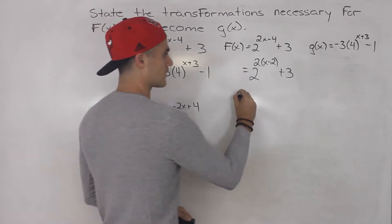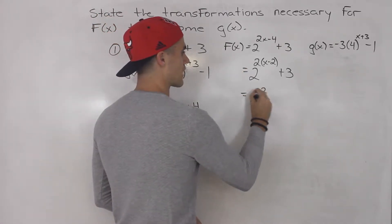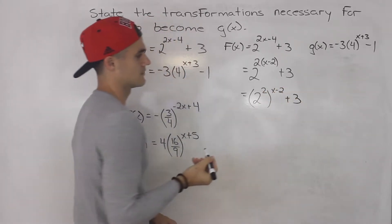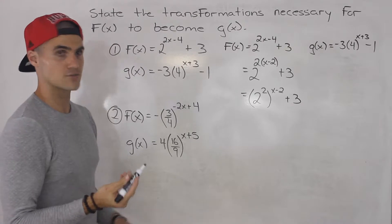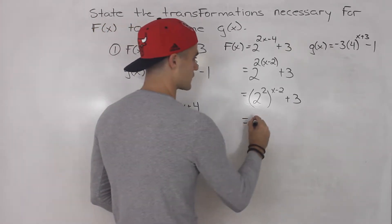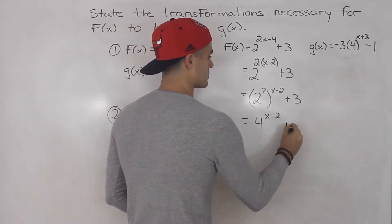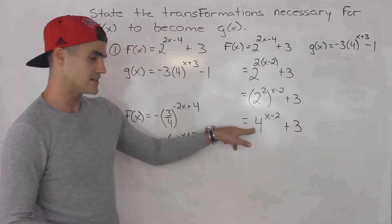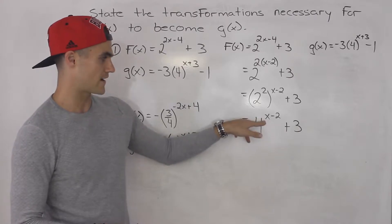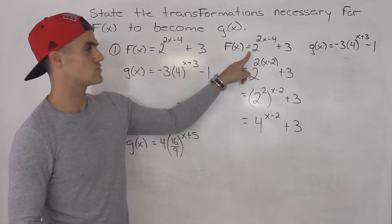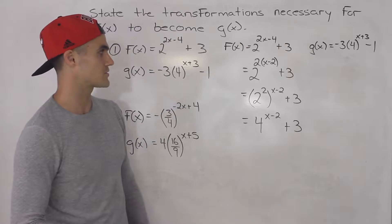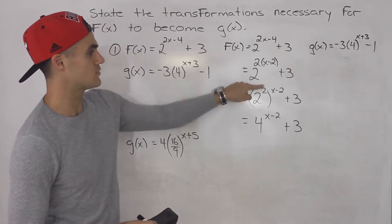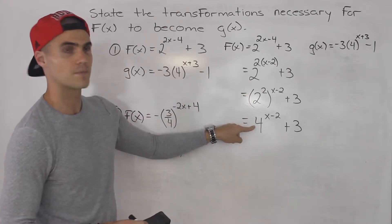We can rewrite this as 2 to the power of 2, put that in brackets, and then put the x minus 2 on the outside. Now 2 to the power 2 is just 4, so this becomes 4 to the power of x minus 2 plus 3. So this 4 to the power of x minus 2 plus 3 is the same as 2 to the power of 2x minus 4 plus 3 — we just manipulated the function, factored out a 2, then replaced 2 squared with 4.